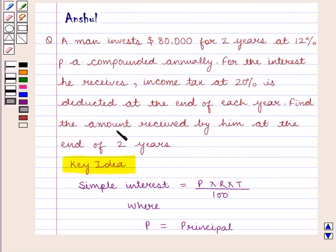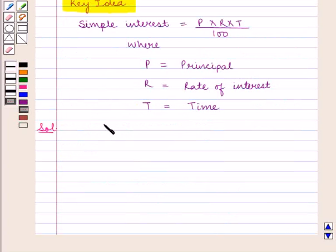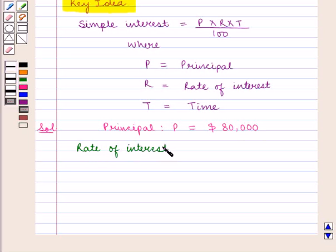We need to calculate the amount received by a man at the end of 2 years if he invests $80,000 for 2 years at 12% per annum compounded annually. Also, on the interest he receives, income tax at 20% is deducted at the end of each year. Here we are given principal P equal to $80,000 and the rate of interest R equal to 12% per annum.